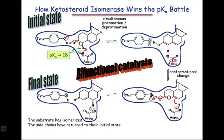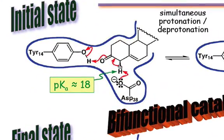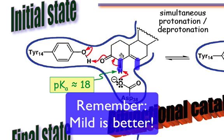Ketosteroid isomerase is a great example of bifunctional catalysis in action. The enzyme catalyzes the transfer of a proton from the alpha position of this ketosteroid to the gamma position. While you can imagine this occurring by deprotonation at the alpha position followed by reprotonation at gamma, this would involve the production of a rather high-energy enolate intermediate.